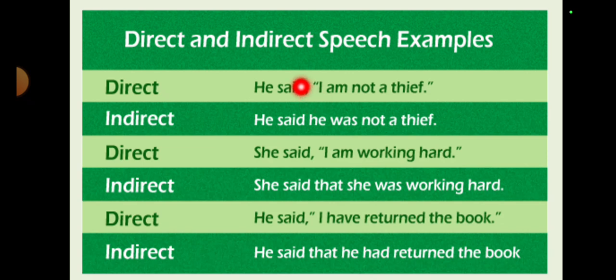So he said that, then I is the first person. We will change it according to the subject of reporting speech, I into he. This is present tense, we will change it into past. Is, its opposite is was or were, so we will write he was not a thief. There are no more commas and the speech is written as a third person is telling.